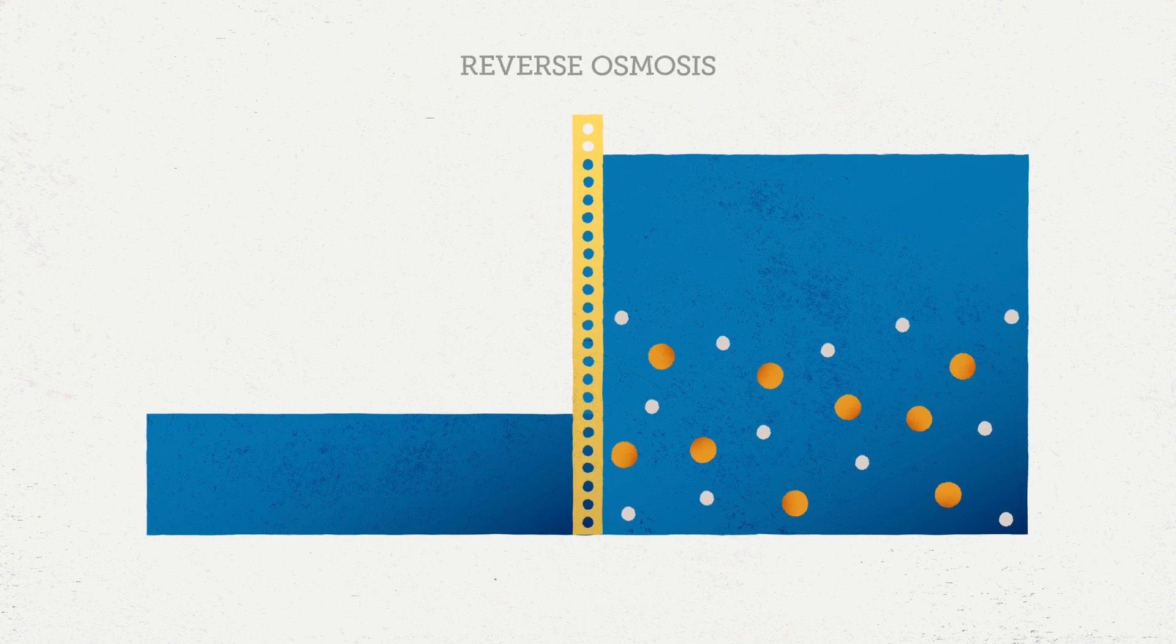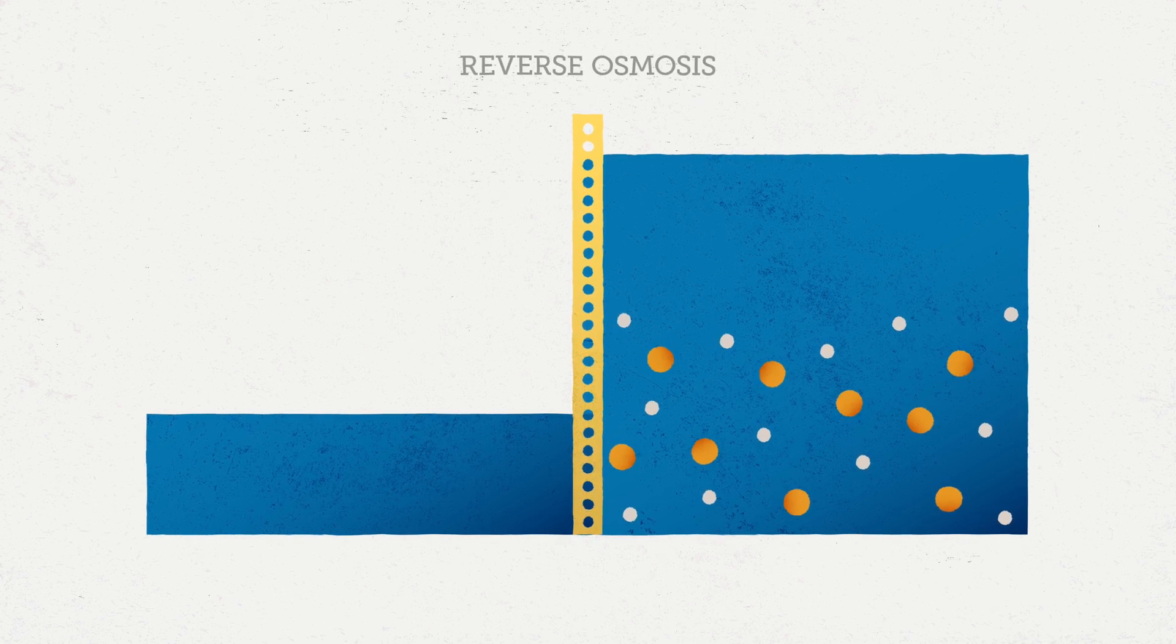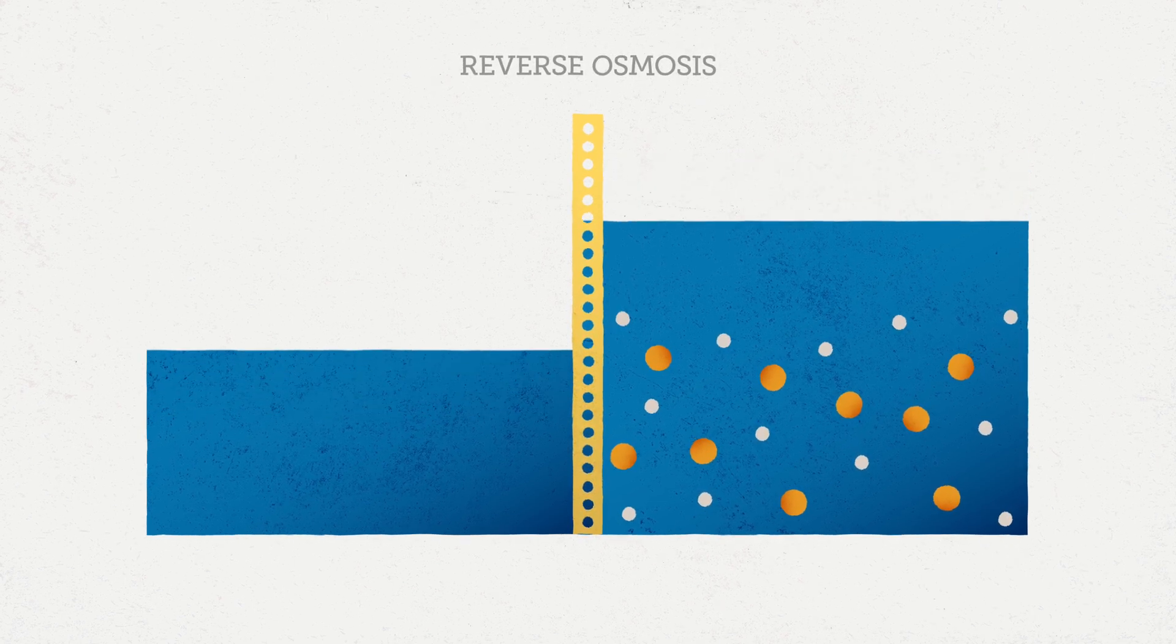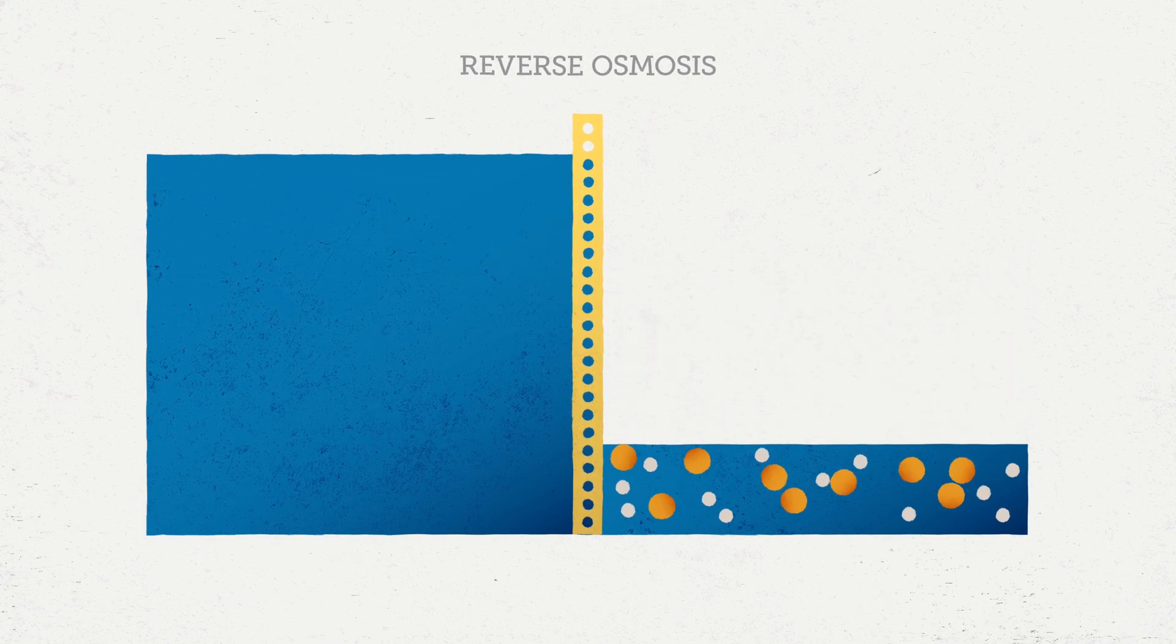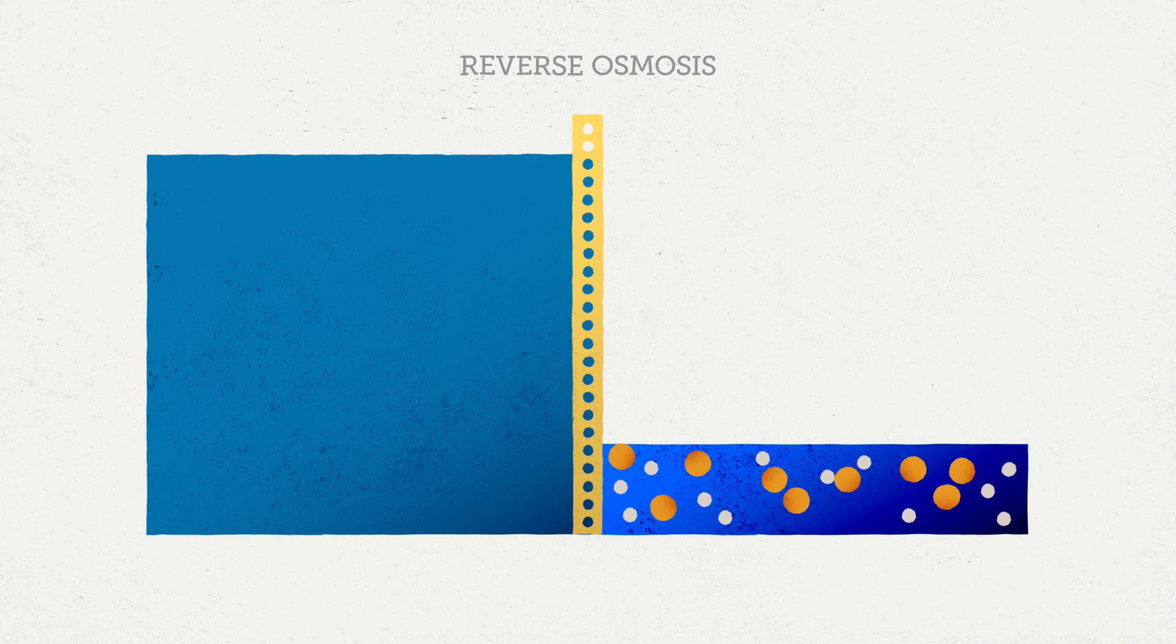And so what we do as a treatment process, a unit process for treating water, is we actually reverse that process. We'll induce a high pressure on one side of the glass, which will drive the fresh water across that membrane, keeping back the reject water or the brine solution on this side of the membrane.